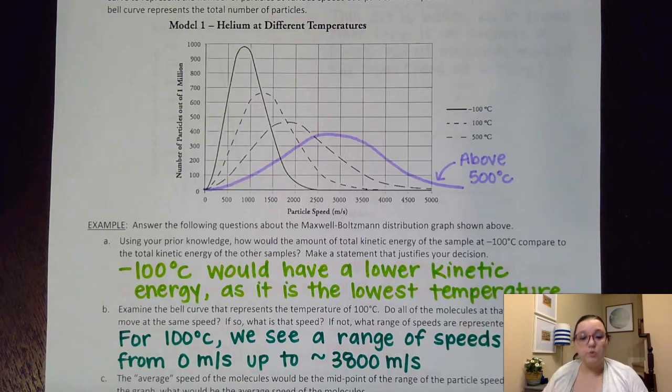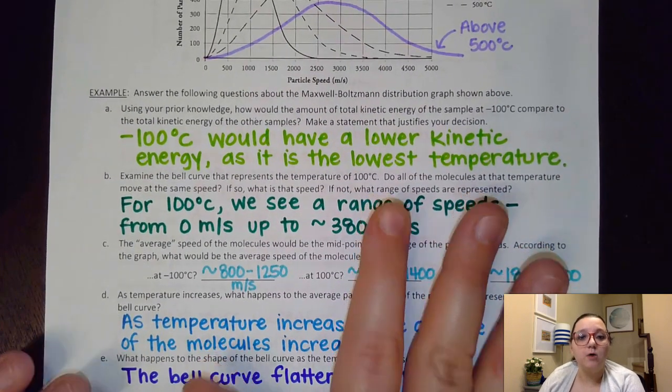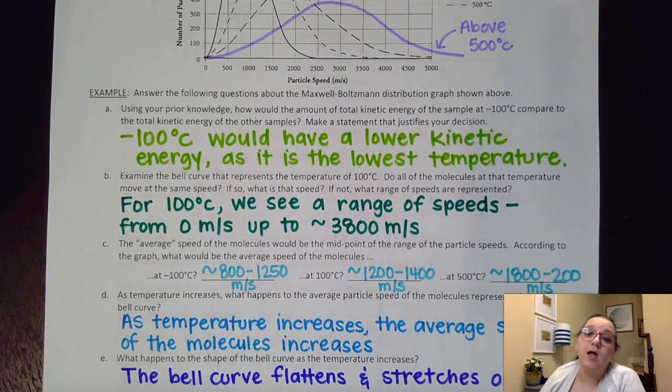And so those are some of the conclusions that we're going to make here. How does that distribution change for those different temperatures even though the total number of particles is remaining consistent.